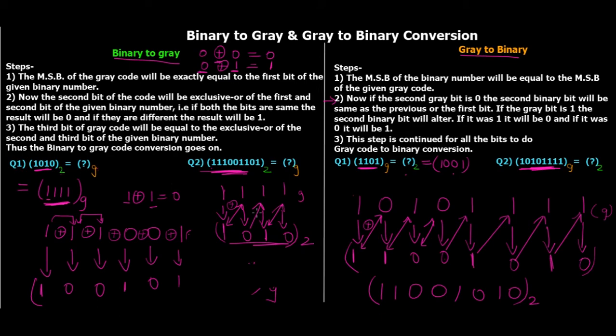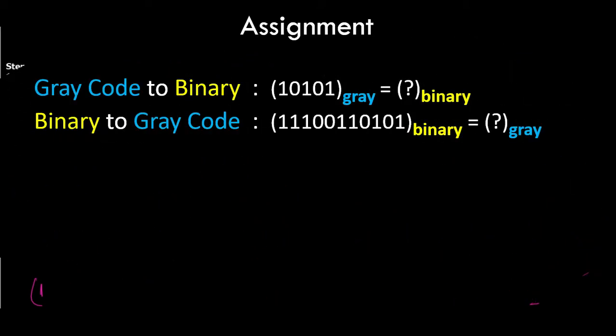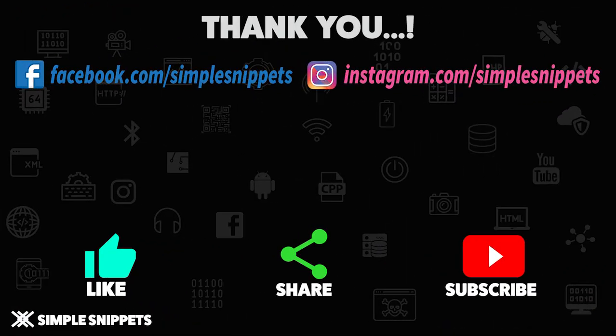That's it for this video. I hope you understood what gray code is, its applications, the theory, and the conversions of binary to gray and gray to binary. There's also an assignment: question one is to convert gray code 10101 to binary, and question two is to convert a given binary number to gray. Put your answers in the comments and I'll let you know if they're correct. I'll also post the answers on the Simple Snippets Instagram page — link is in the description. If you liked this video, give it a thumbs up, share it, and subscribe!